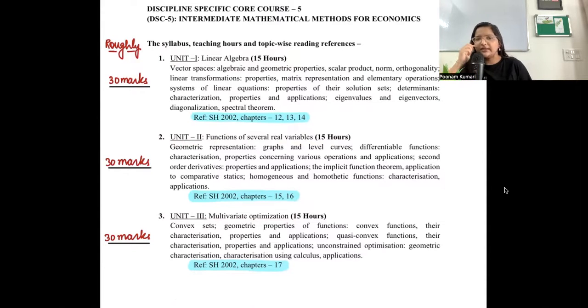So three units: linear algebra, functions of several real variables, and multivariate optimization. In first semester you were studying, you didn't study anything about linear algebra. So for linear algebra you have to cover these topics and for that you have to refer 3 chapters from the book. Sydsaeter and Hammond chapter 12, 13, and 14. In semester one we studied functions of one variable in detail - what different types of functions there are, how to differentiate them, how to optimize functions of one variable.